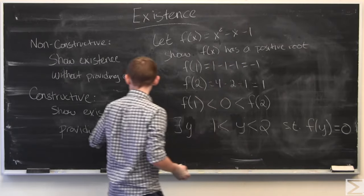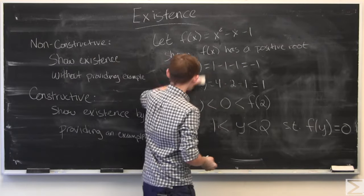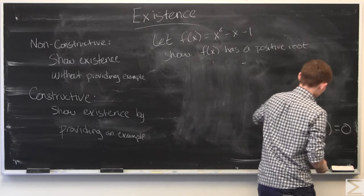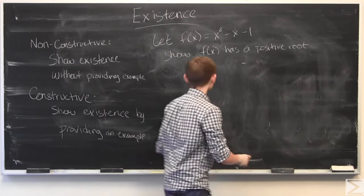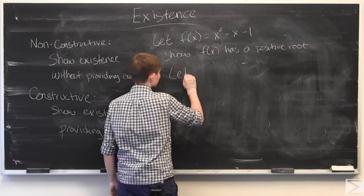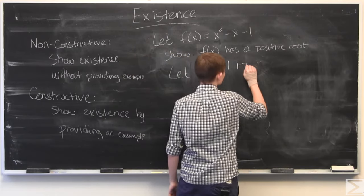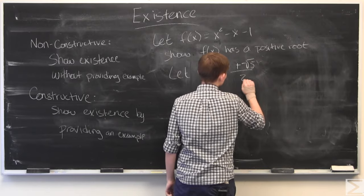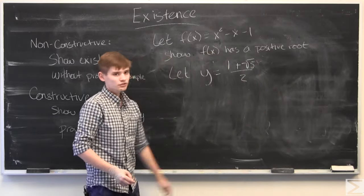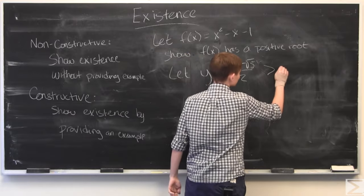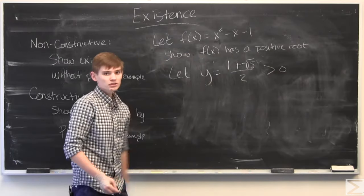Whereas, if you were to do this constructively, you would just start off by saying let y equal 1 plus root 5 over 2, which obviously must be greater than 0.